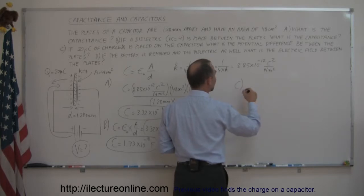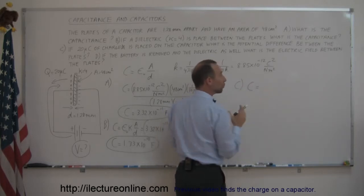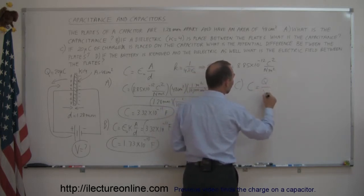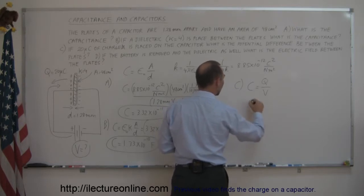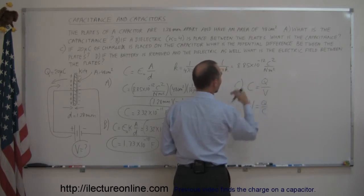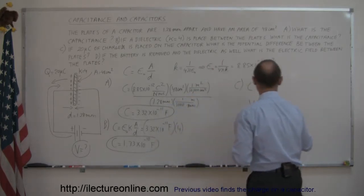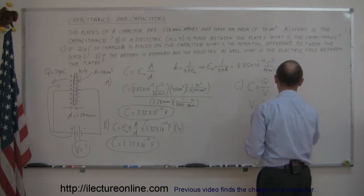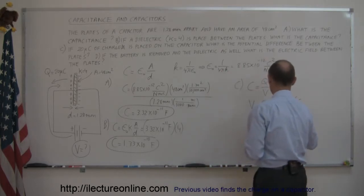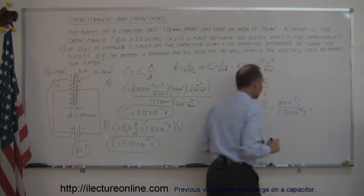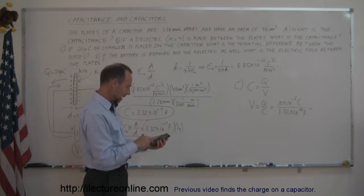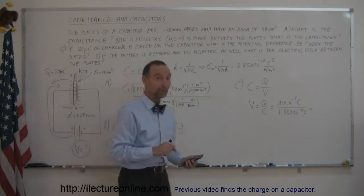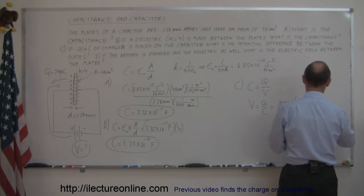By definition, capacitance equals charge divided by voltage. Rearranging, V equals Q over C. The charge Q is 20 times 10 to the minus 6 coulombs, divided by the capacitance with the dielectric, 1.33 times 10 to the minus 10 farads. That ratio gives us the potential difference. The result is 150,000 volts — quite a battery!